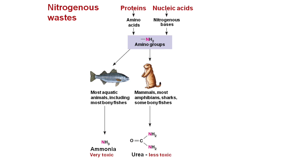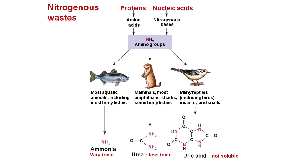Mammals, most amphibians, and some fishes like sharks first use their livers to convert the very toxic ammonia to a less toxic urea. Urea also requires water to be excreted, so mammals like us excrete urea in our urine. Many reptiles, birds, and insects mainly excrete uric acid. Uric acid is much less toxic and requires more energy to produce, but it can be excreted as a paste with very little water loss.